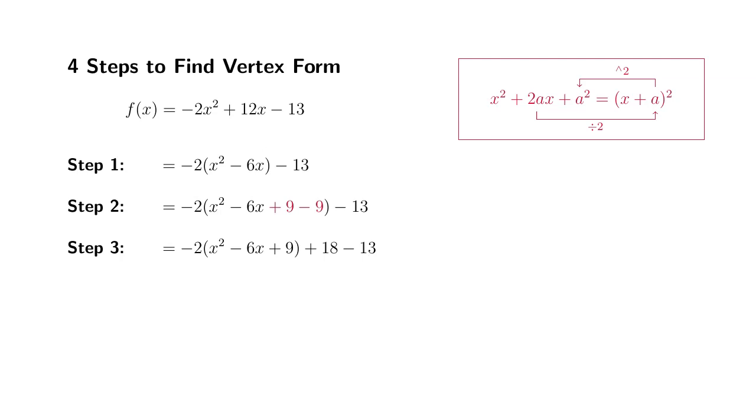Step four, we just need to complete the square and clean up a little bit. We'll get negative 2 is still sitting there. Remember that this number is just a one half of this number in front of x. So you have x minus 3 quantity squared, and the 18 minus 13 is 5. So this is exactly the same function f, just in vertex form. That's it. I hope that this was clear.